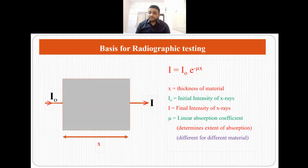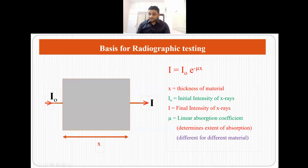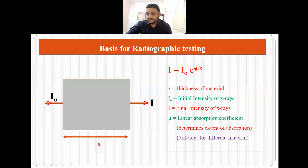The basis for radiographic testing is the intensity of x-rays coming out of the specimen. We calculate that intensity using the formula I = I₀ · e^(−μx), where I₀ is the initial intensity of x-rays, μ is the linear absorption coefficient which determines the extent of absorption and is different for different materials, and x is the thickness of the material the x-rays are passing through. This is how we determine the intensity of the final x-rays coming out of the specimen.